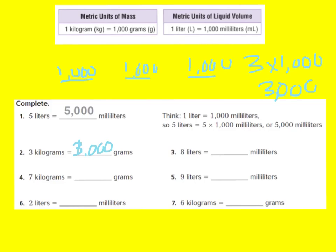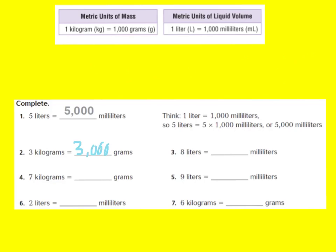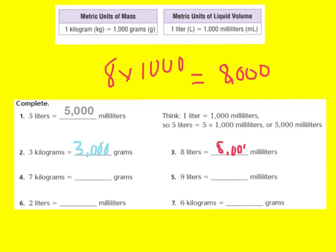Let's go on to number three. Number three says 8 liters equals how many milliliters? I know from my chart that 1 liter equals 1,000 milliliters, but I have 8 of those liters. So I'm really going to say 8 times 1,000, and 8 times 1,000 is 8,000. So there are 8,000 milliliters in 8 liters. Now I want you to try numbers 4, 5, 6, and 7 on your own, then press play when you're ready to go over the answers.